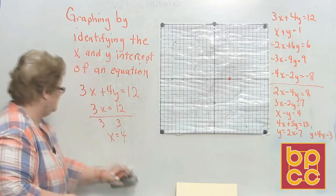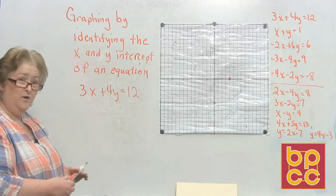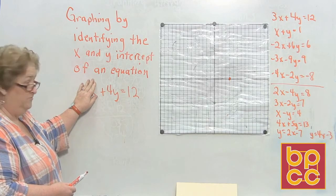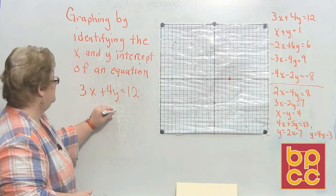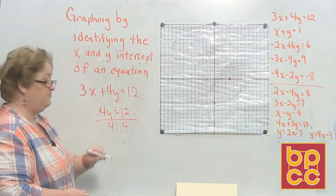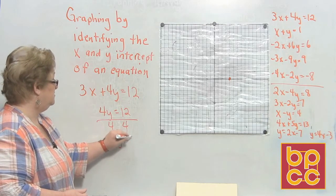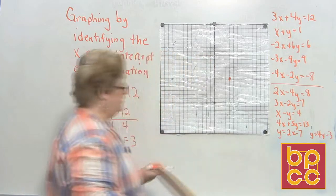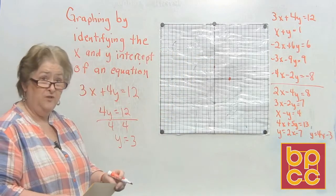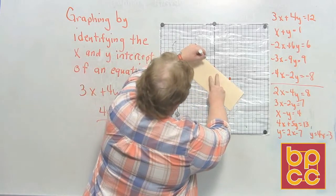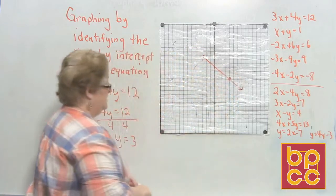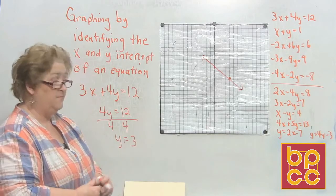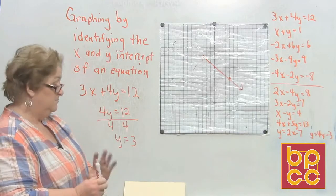Now let's solve for y. If you want to find where it crosses the y, cover the x and you get 4y equals 12. Divide both sides by 4, and y equals 3. So I go up the y-axis to 3 — 1, 2, 3 — and place a point. I now have my two points from plotting the x and y-intercepts, and I can draw my line. As long as this method works for you, it's perfectly okay to graph this way, though you'll see on some other examples it won't always work.